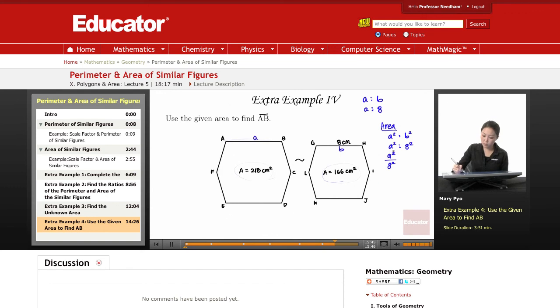So we're going to use this ratio and make it equal to these areas. So A squared is the same thing as here, 218 over 166.